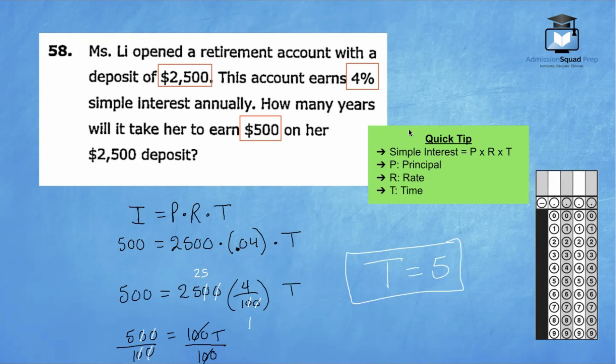Now let's go ahead and fill in the answer to the problem on the actual grid. Because our answer is 5, we're going to start right here in the white box. We're going to write the number 5 here. We're also going to bubble in the number 5 down here. Let's head over to question 59.